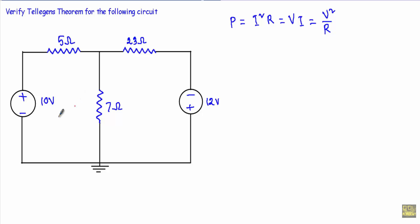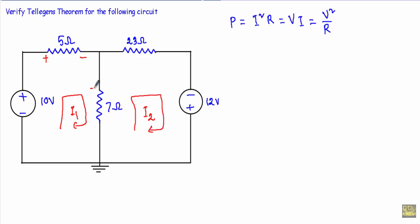I will assign mesh current I1 to mesh one and mesh current I2 to mesh two. For each element, I will mark the positive and negative terminals based on the mesh current directions. Then I will apply KVL to each and every loop.